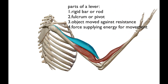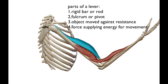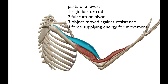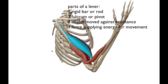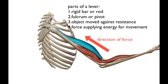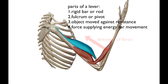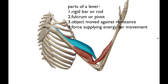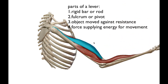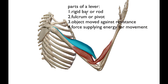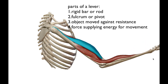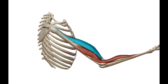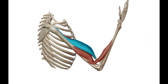Finally, we have the force supplying the energy for movement — that's essentially all you need for a lever. Your book just wants you to understand the main components and how they relate to the body. When the biceps contract, the force goes upward because the muscle is shortening, causing the forearm to move up. The resistance is the weight with gravity pulling it down, and the forearm moves against that resistance — so the movement and force are both going up.